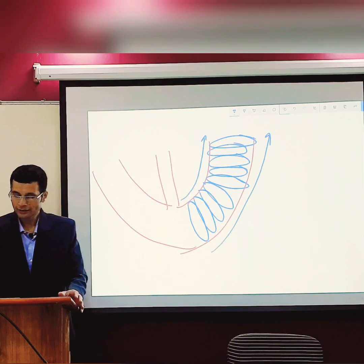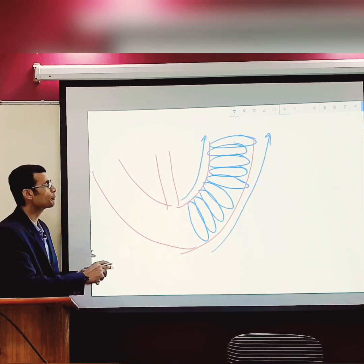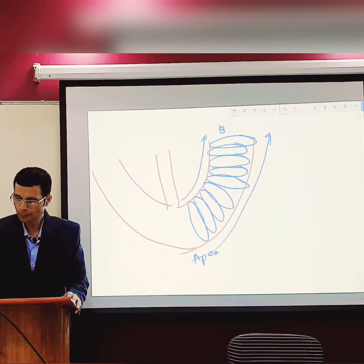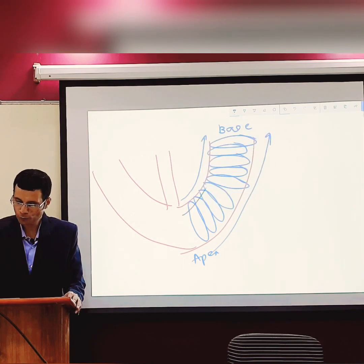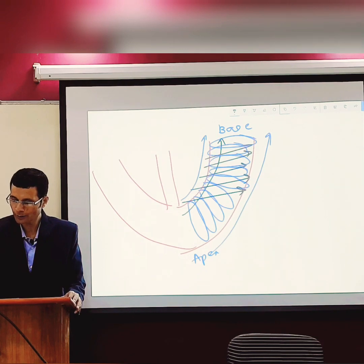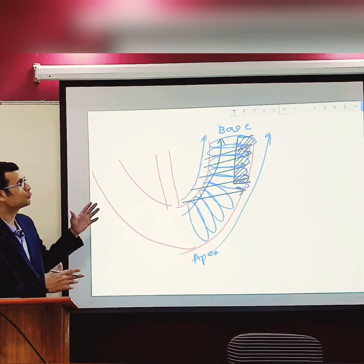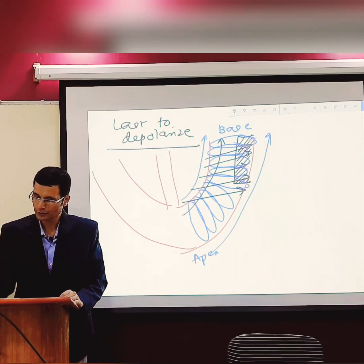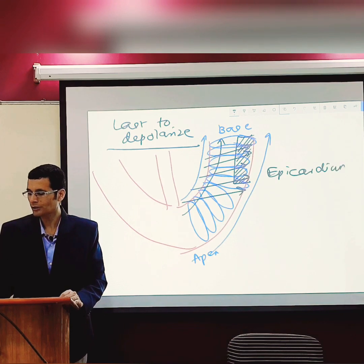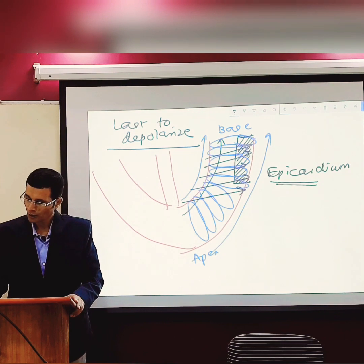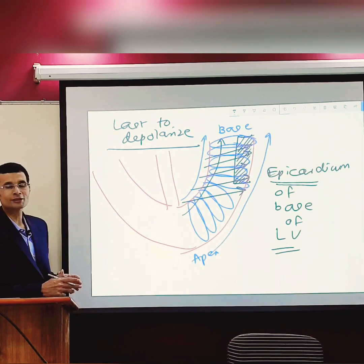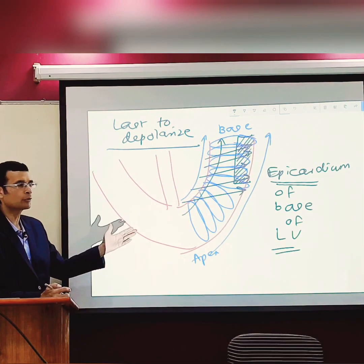Depolarization spreads from apex to base and from endocardium to epicardium. This is the apex, this is the base. So the last part of the heart to get depolarized is the epicardium of the base of the heart — or the base of the left ventricle, to be more precise — because the left ventricle is a thicker muscle mass, so it will take extra time to complete its depolarization.